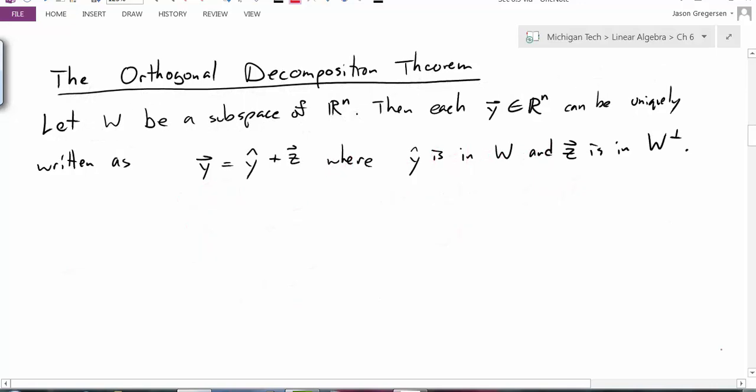The orthogonal decomposition theorem states that if we have w, let w be a subspace of Rn, then each vector in Rn can be uniquely written as the sum of y hat plus z, where y hat is in our subspace w and z is in w perp. That's exactly what we just did. But this orthogonal decomposition theorem is saying that we can always do this. The only question now is, how do we find this y hat? In the last example, it was just a projection of y onto our other vector. But now if we're projecting onto a larger space that has more than one basis vector, what do we do?